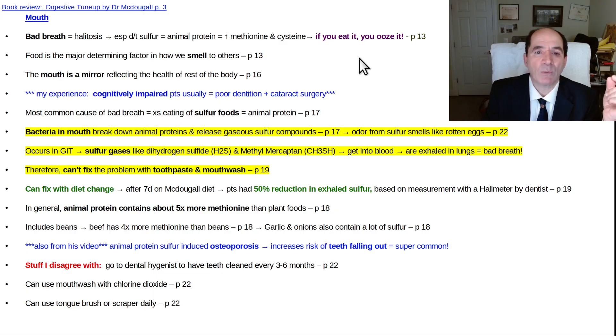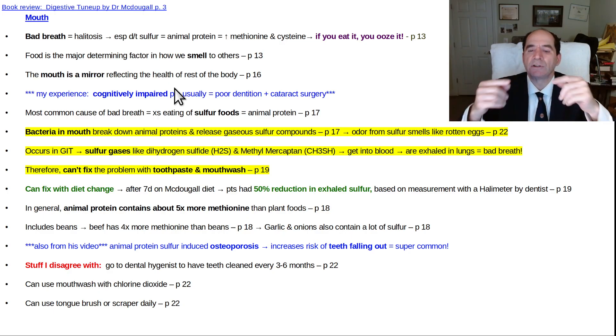The main factor in determining how we smell and how our breath smells is what we eat. He says the mouth is a mirror reflecting your health and the health of the rest of the body. I got that impression because I look at a lot of demented brains, and I can tell from across the room. If I see bilateral cataract surgery and poor dentition, like all the teeth are missing or a bunch of periapical lucencies around the teeth, I know that patient's probably demented. Usually that goes with an atrophic brain shrunken away from the inner table of the skull.